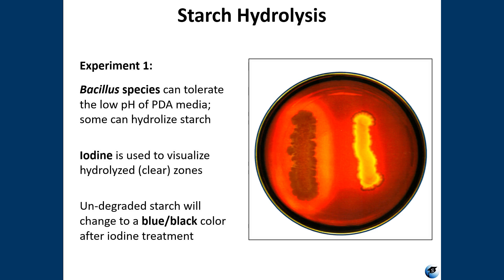Bacillus are acidophilic and endospore-forming bacteria; therefore they can tolerate the low pH in PDA media. Unlike many bacteria, Bacillus can survive on PDA. Some Bacillus can also hydrolyze starch, which is abundant in PDA — potato dextrose agar has a lot of sugar and starch in it. Iodine is used to visualize the hydrolyzed zones because iodine reacts with starch and changes to a bluish-black color. After the starch hydrolysis plate incubates, we add iodine to the surface to see where starch is intact and where it has been hydrolyzed.